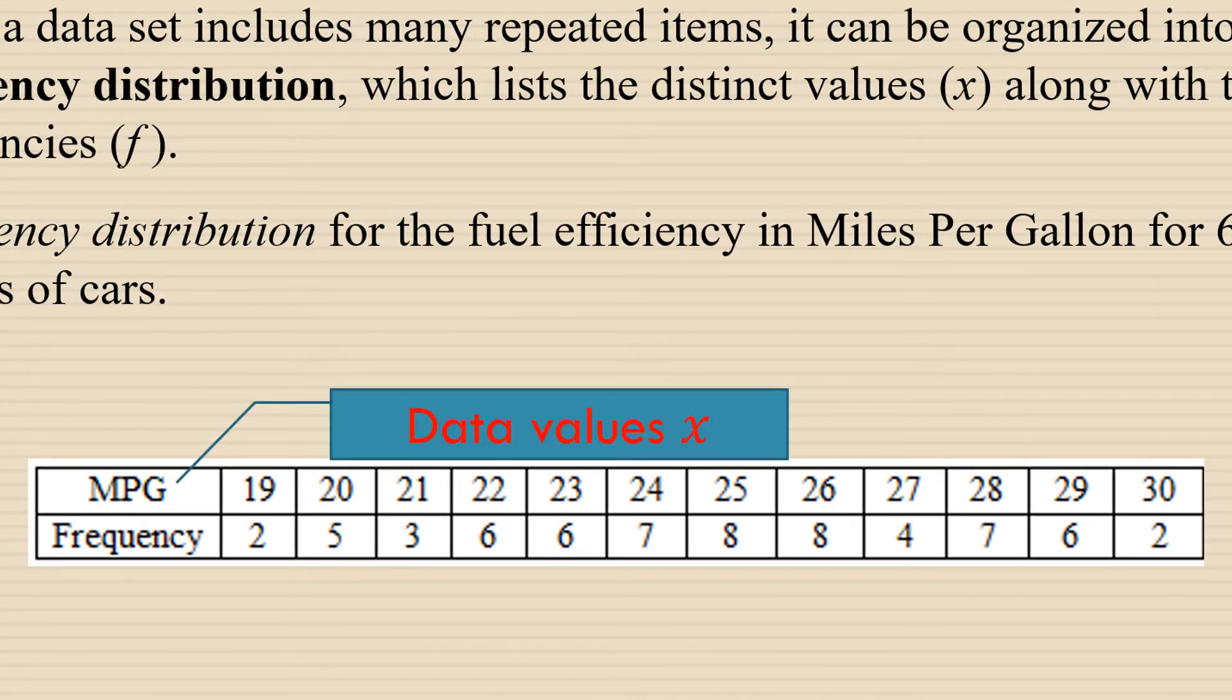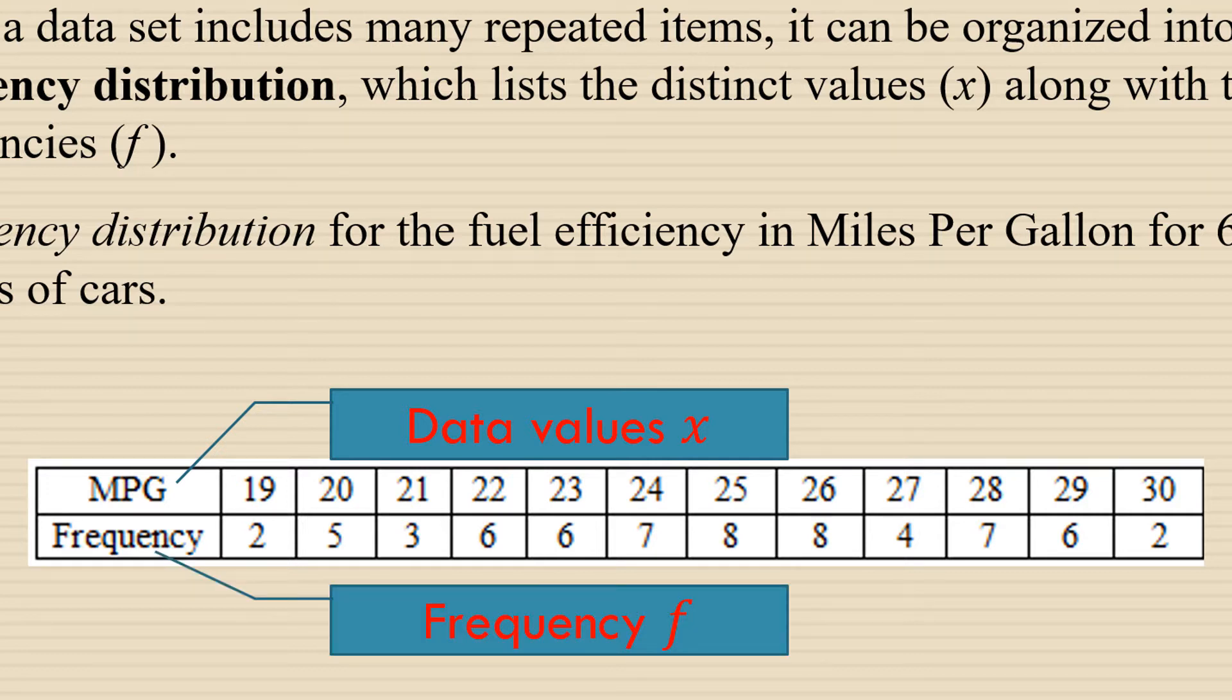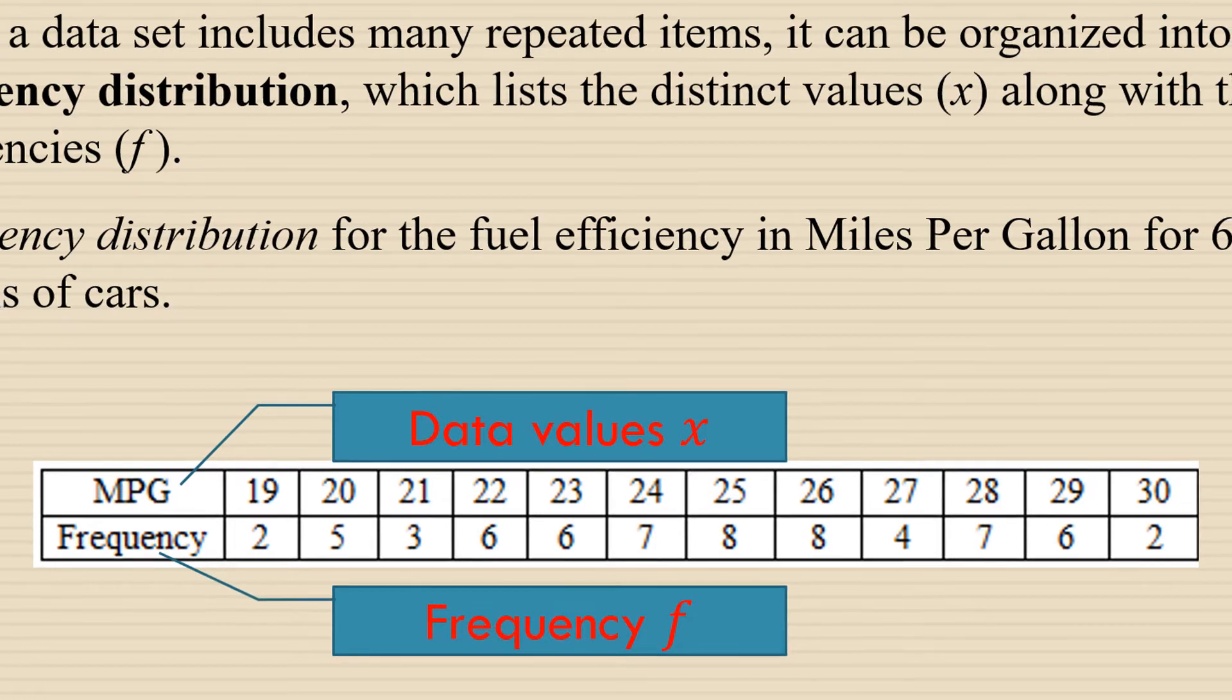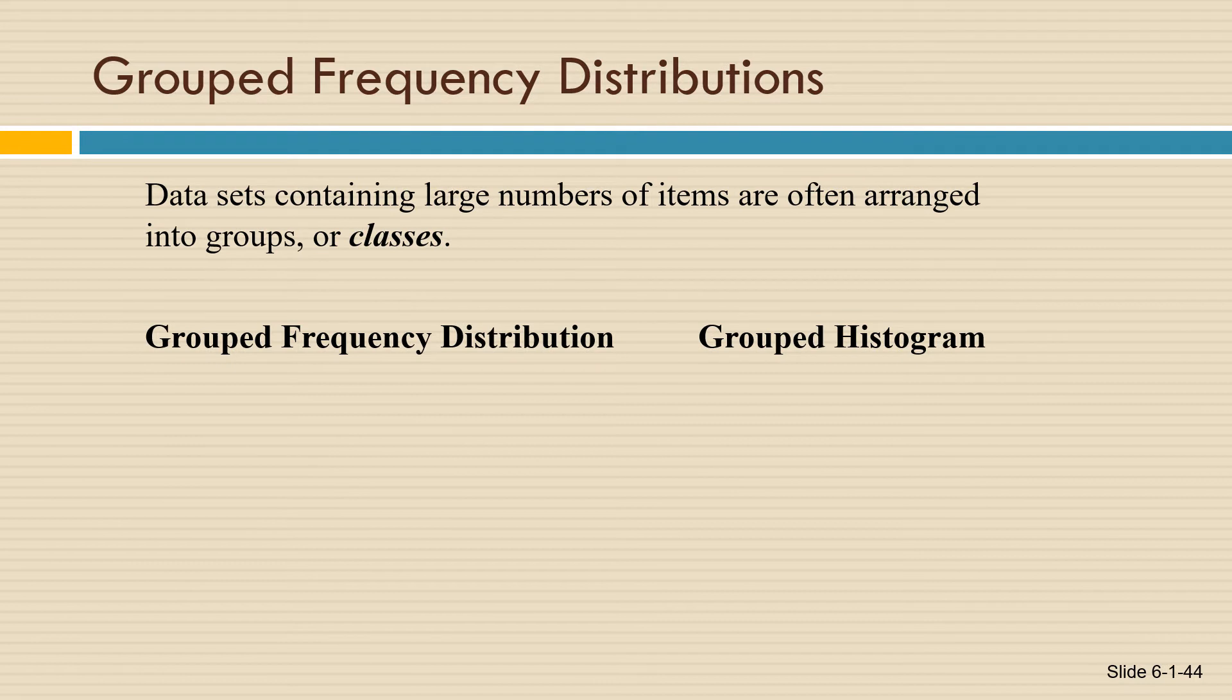So the data values are the number of miles per gallon or fuel efficiency for each car, and the frequencies are the number of models of cars that have that fuel efficiency. In this video, we're going to look at grouped frequency distributions. When data sets containing large numbers of items are analyzed, it's often helpful to arrange the data into classes or groups.